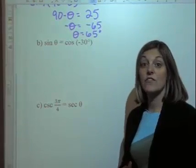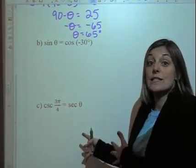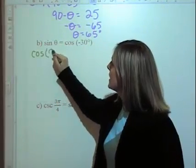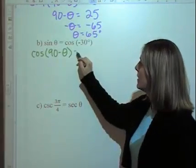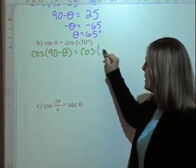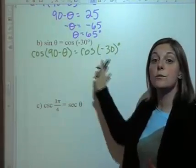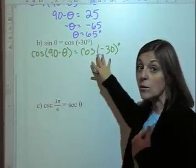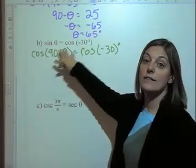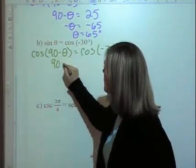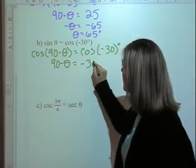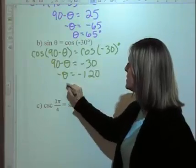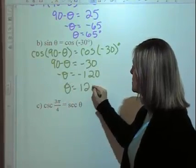Next: sine of θ equals cosine of negative 30 degrees. Sine of θ is the same as cosine of (90 − θ). So if cosine of (90 − θ) equals cosine of −30, then 90 − θ must equal −30. Subtracting 90 from both sides gives −θ = −120, so θ = 120 degrees.